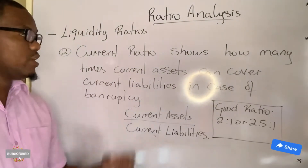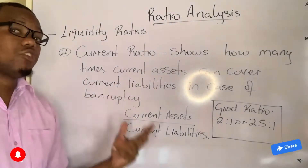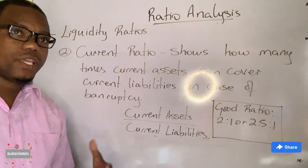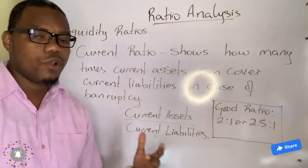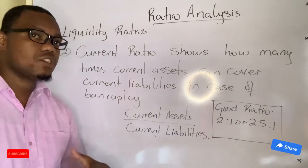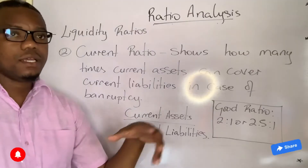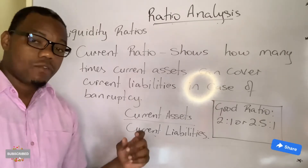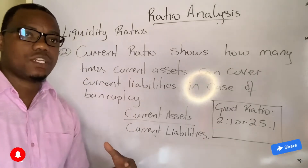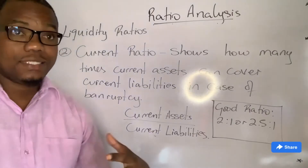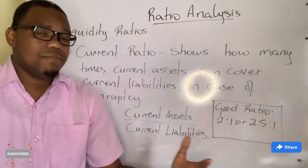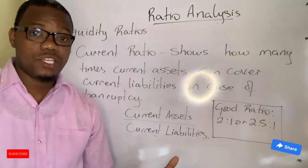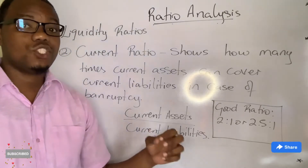The second liquidity ratio is the current ratio. It shows how many times your current assets can cover your current liabilities. You cannot invest in a business without thinking about the chances of the business going bankrupt. This ratio is important because if the business goes bankrupt, you need to know the assets can cover the liabilities. If the assets are not able to cover your liabilities, that is called unlimited liability, which means creditors may take the personal belongings of the owner or shareholders.